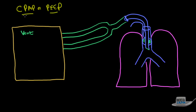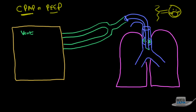CPAP is typically the term used for non-invasive ventilation — instead of putting a tube down into someone's throat, we use a mask over their face, like a BiPAP or CPAP mask. If you have a ventilator invasively, then it's known as PEEP.